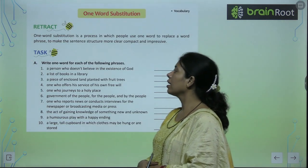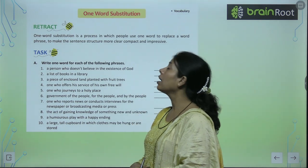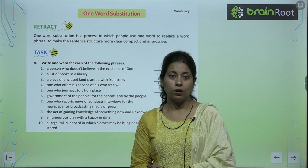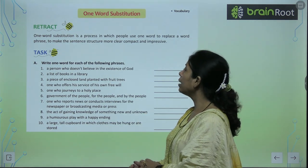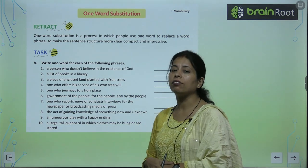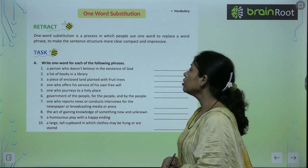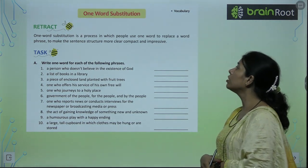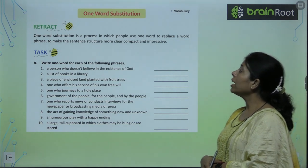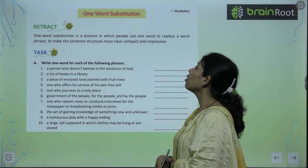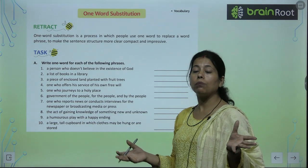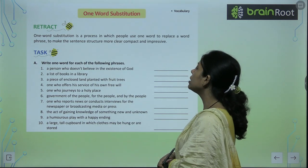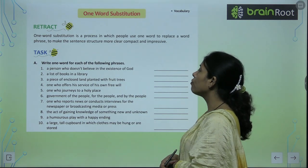One word substitution — यहाँ पर हमको क्या दिया गया है? One word substitution क्या होता है — एक लंबे phrase के लिए आपको एक word लिखना है. जैसे हिंदी में मुहावरे होते हैं, ऐसे यहाँ पर होता है. A one word substitution is a process in which people use one word to replace a phrase, to make a sentence structure more clear, compact and impressive.